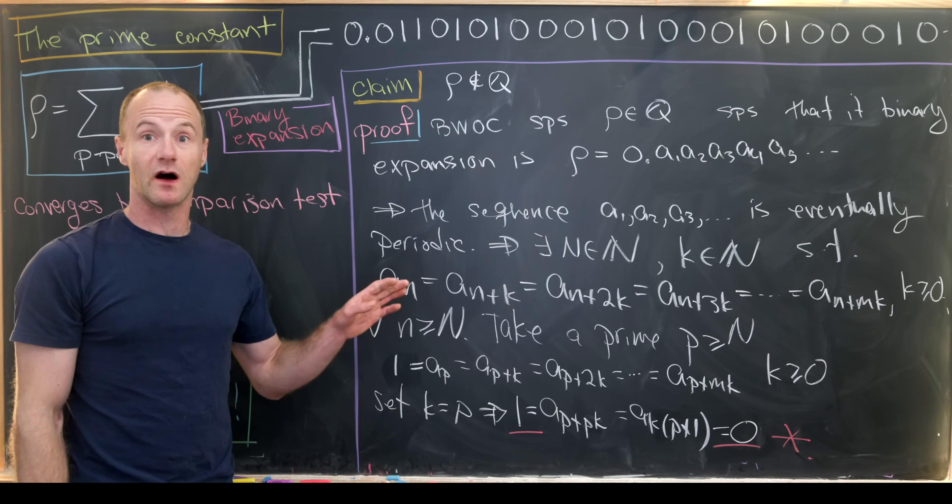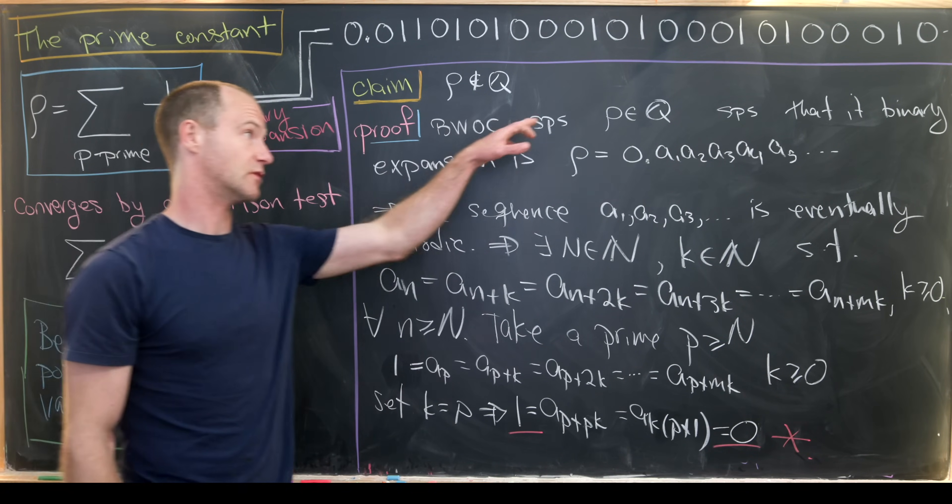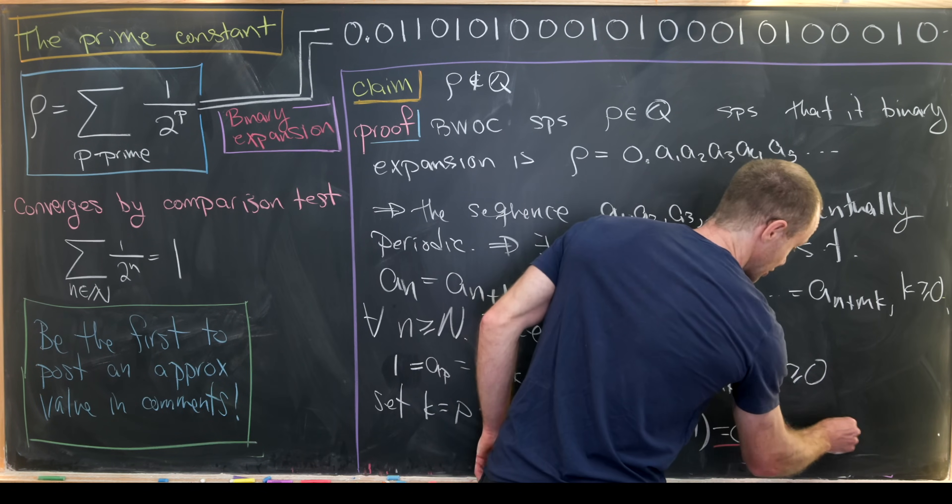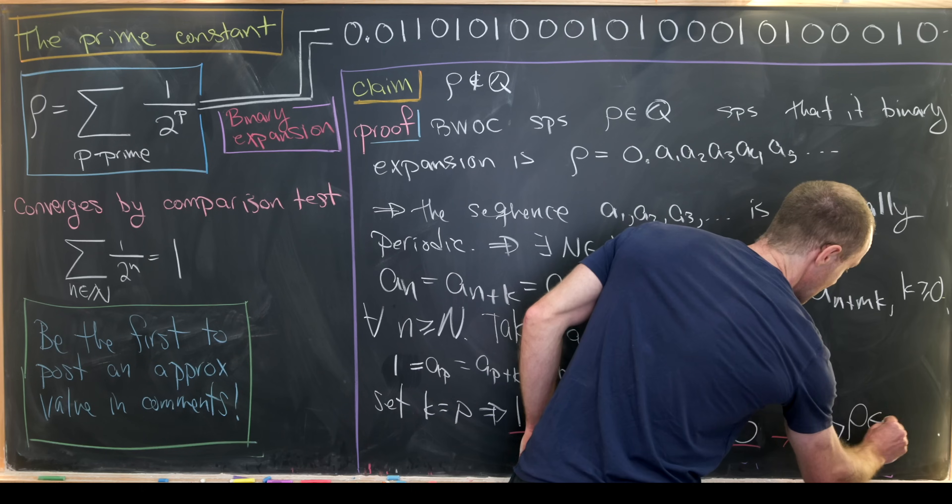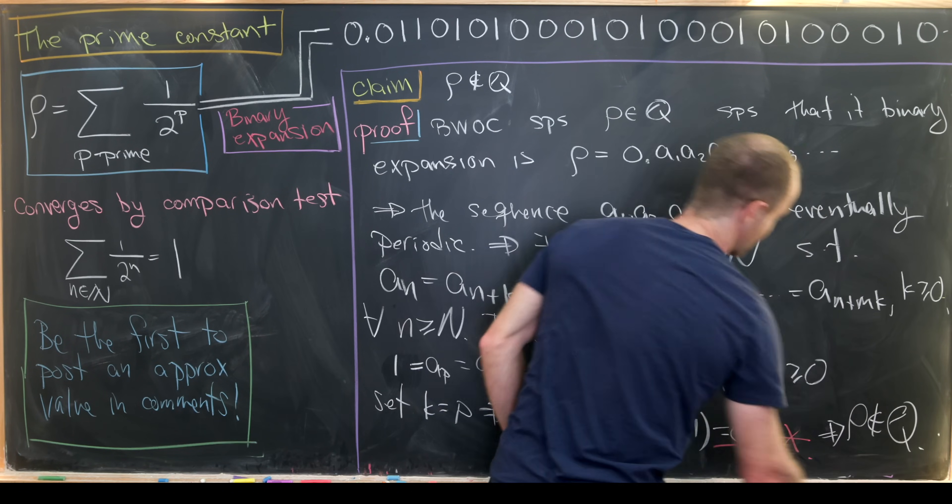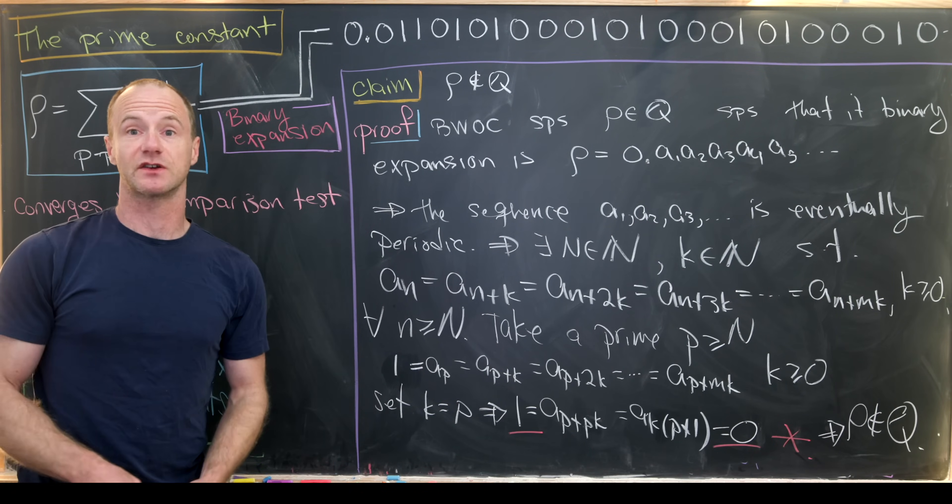What did we contradict? Well, the only assumption that we've made, which is that rho was rational, which means indeed rho must be an irrational number. And that's a good place to stop.